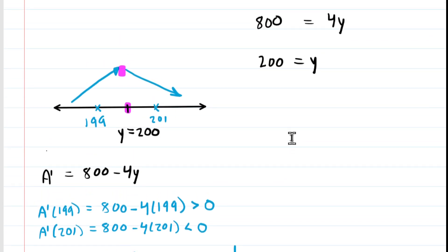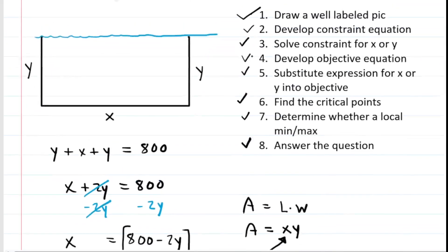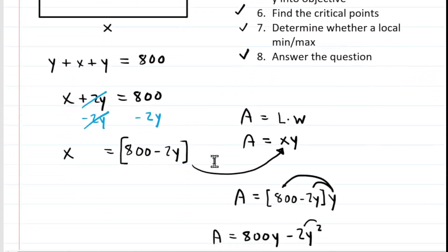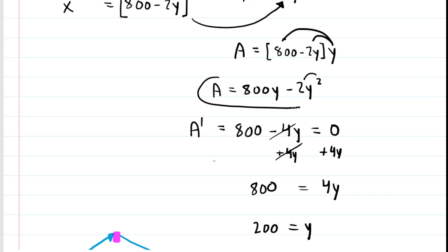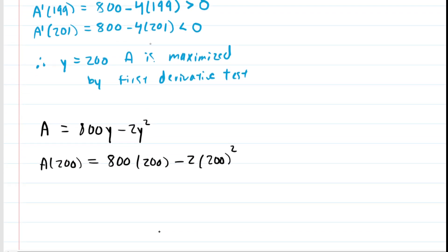Now that we know y equals 200 maximizes the area, we can actually complete the question. Step 8 asks us to answer the question. A lot of students just give up at this point thinking they're done, but we have to answer the specific question. They're asking for the largest area. We have a nice area equation: A equals 800y minus 2y squared. Plugging in 200 for y, we find that the area when y equals 200 is 80,000. The unit here would be square meters, not just meters, because we're calculating an area. This is the correct answer for the area.